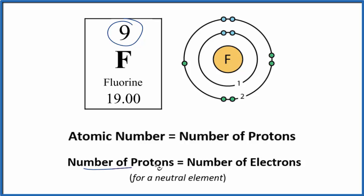And the number of protons, that's equal to the number of electrons for a neutral element. And fluorine is neutral, all the elements on the periodic table here are listed as neutral. So we know that we have 9 electrons.